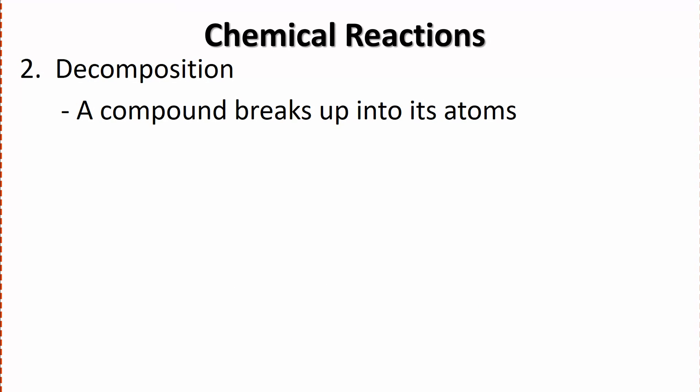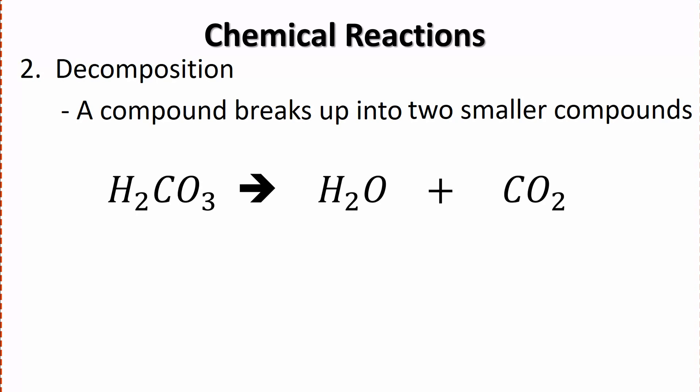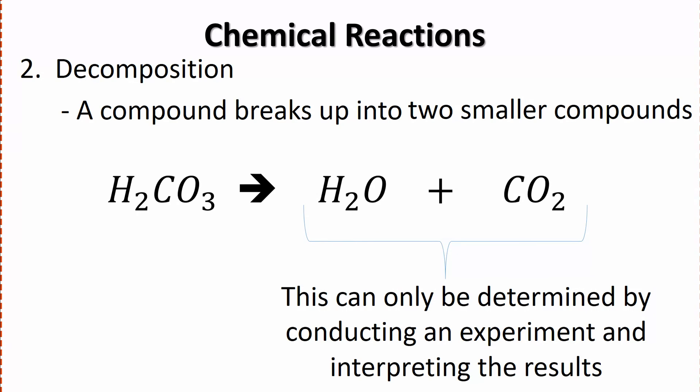Something that happens with these decomposition ones—here was our definition from earlier. We've got a compound breaking up into its atoms. But what can actually happen is a compound can break up into two smaller compounds. For instance, we've got carbonic acid, and it actually breaks up into water and carbon dioxide. But the fact remains that we would only know how to determine our products in this case if we conducted an experiment and interpreted the results. There wouldn't really be a way for us to figure this out using pen and paper what exactly it's decomposing into.